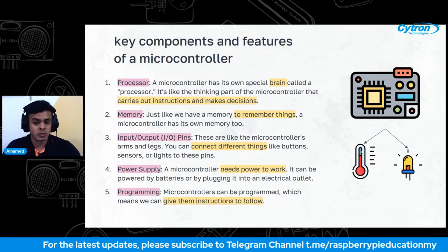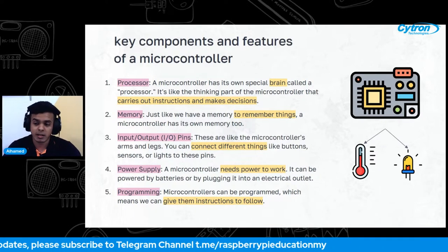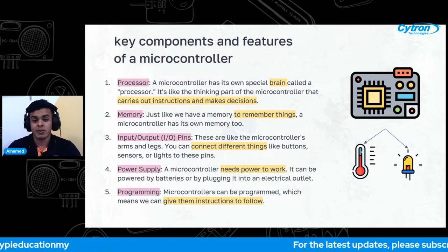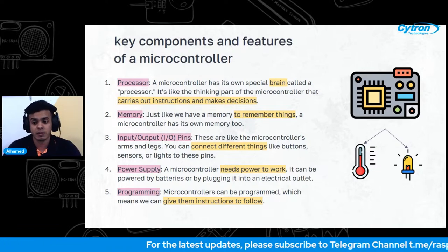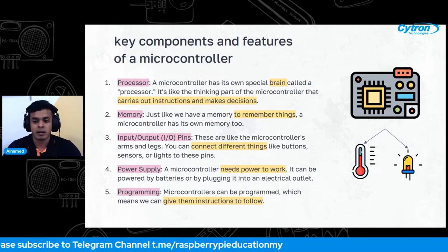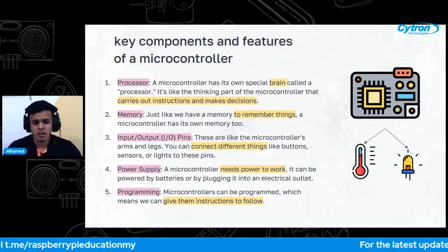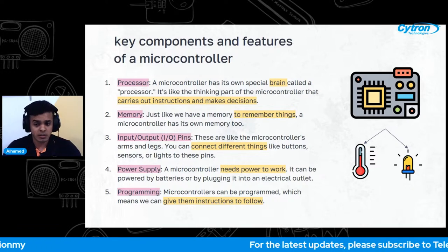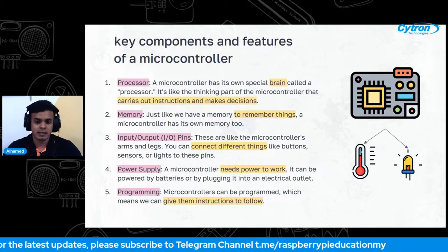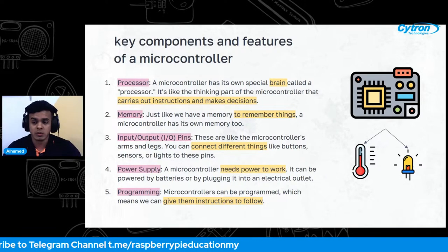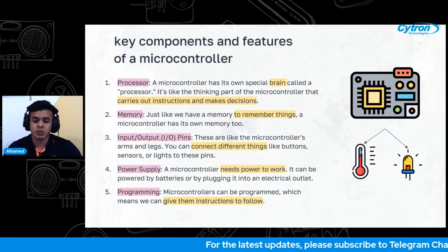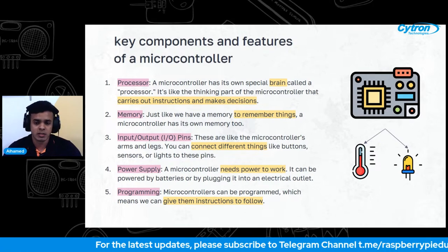A microcontroller also needs power to work. The power supply provides the necessary electrical energy — think of it as the fuel or battery. It can be powered through batteries or by plugging it into an electrical outlet. When the microcontroller is powered on, it becomes alive and ready to perform tasks. Without power, the microcontroller wouldn't be able to think, process information, or control other devices.